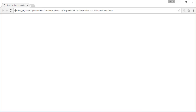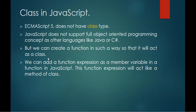What we learnt from this session is very simple: we can create a function in such a way so that it will act like a class. We created properties, and those properties will act like variables of a class. We also added a function expression, and that function expression will be a method of a class. This is what we learnt — how we can build a function in such a way that it acts like a class, and how we can achieve class functionality in JavaScript with the help of functions.